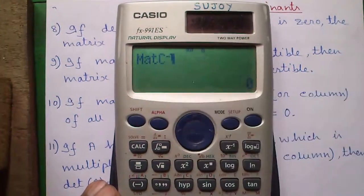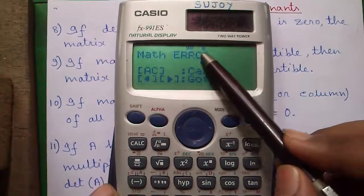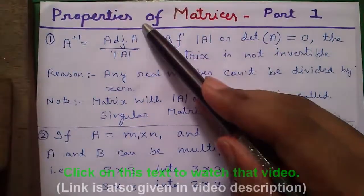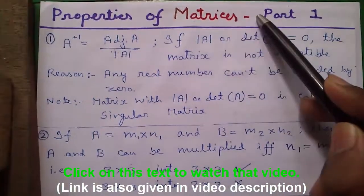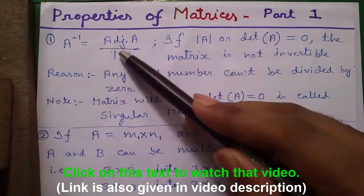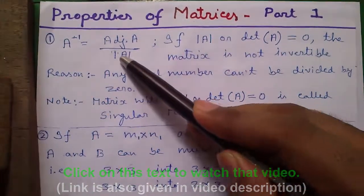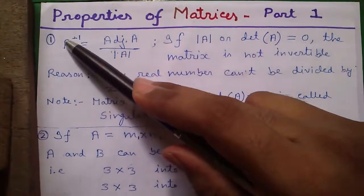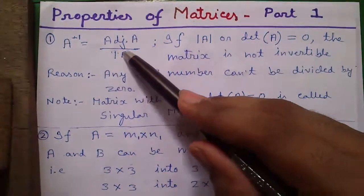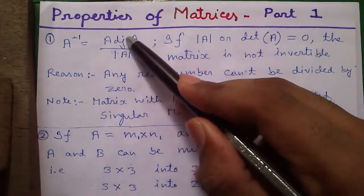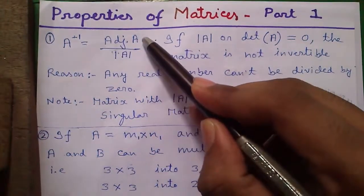So matrix C inverse, let's press equals to, we get a math error. I have another video called properties of matrices. There I described if the determinant is equal to 0, why we can't find out the inverse.